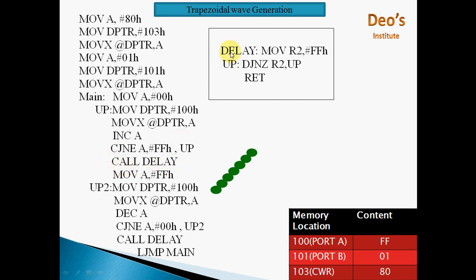CALL DELAY calls the delay procedure. This is the same delay procedure seen earlier: MOV R2, #FFH — R2 is loaded with FFH and decremented by 1 each time till it becomes 0. DJNZ R2, UP — decrement and jump if not zero. When R2 becomes 0, RET returns. During this delay, FFH is continuously sent to DAC so the analog output holds at FFH for that duration.